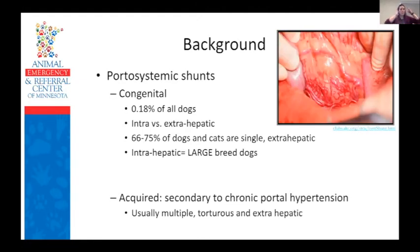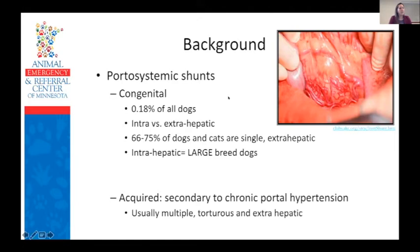Acquired portosystemic shunts most commonly occur secondary to chronic portal hypertension. Increased portal pressures result in opening of vestigial fetal blood vessels. They are usually multiple, tortuous, and extrahepatic in nature. The most common causes of acquired shunts are hepatic fibrosis, congenital non-cirrhotic portal hypertension, and hepatic AV malformations. For this presentation, I'm going to focus mostly on the treatment of single extrahepatic congenital shunts because that's what we tend to see in practice most commonly.